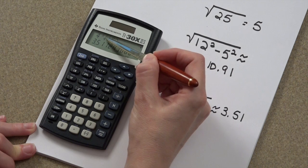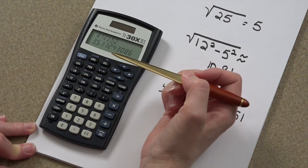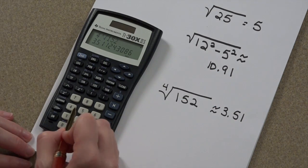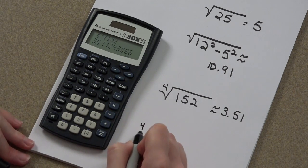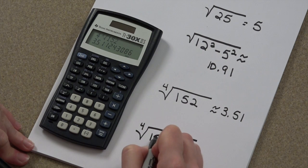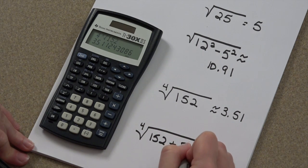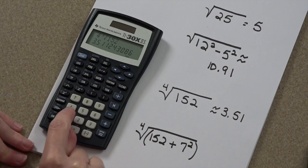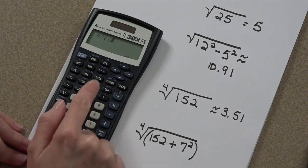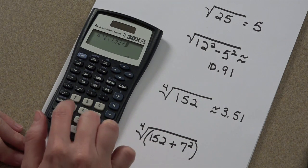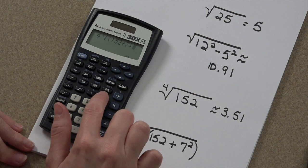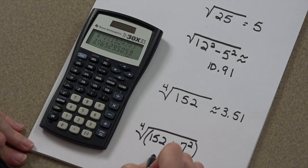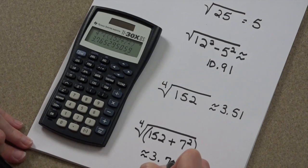Now, there aren't parentheses here automatically. You can insert them if you wish to. So we can take, if we wanted to, the fourth root of 152 plus 7 squared. The fourth root of 152 plus 7 squared, close the parentheses, and our answer is about 3.77.